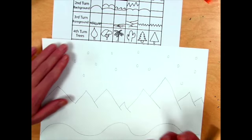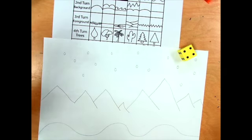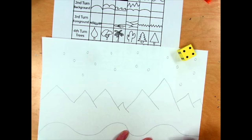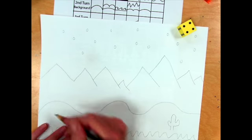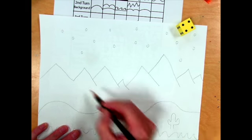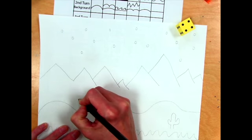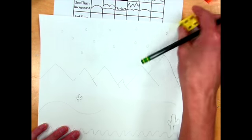Then I'm going to do my trees on my fourth turn. I roll my dice again and get a cactus. I think I'll put him right here, and you can do more than one if you want to. Now remember, as things go back, they're going to get smaller. So if I want another cactus up here, I'm going to do him much smaller because things get smaller as they go back.